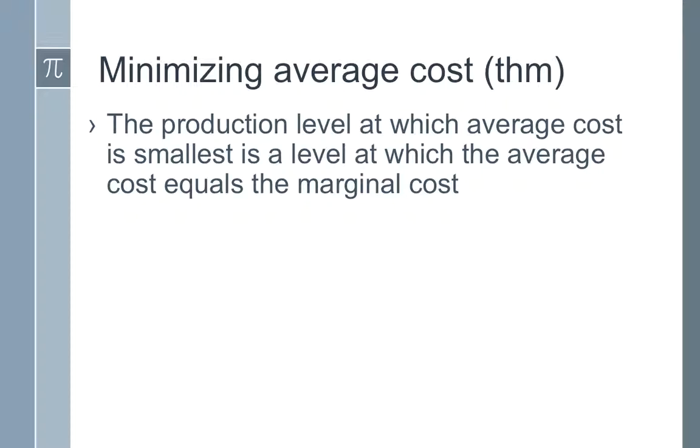Minimizing average cost. The production level at which average cost is the smallest is where the average costs equal the marginal costs. Average cost is the cost function, c of x, divided by x, meaning dividing by the number of items produced.